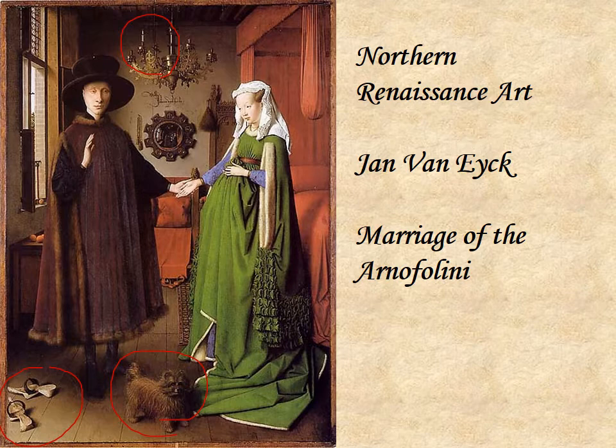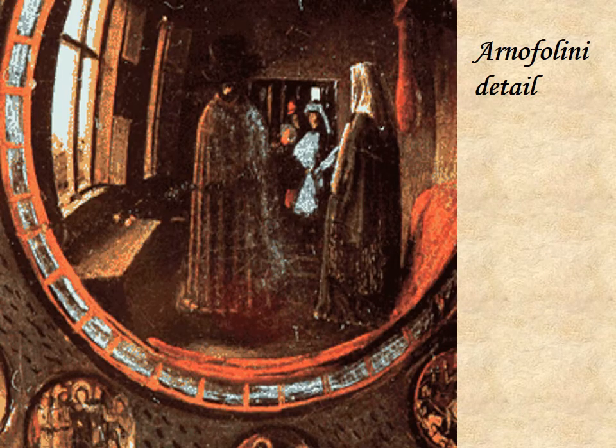Notice something else: notice the mirror on the back wall. Here is the reflection painted into that mirror, just like we were looking at it in the room with the couple and the painter in the background. So Jan van Eyck, while he really represents Northern Renaissance art with his focus on fine detail, was quite a master of perspective as well.